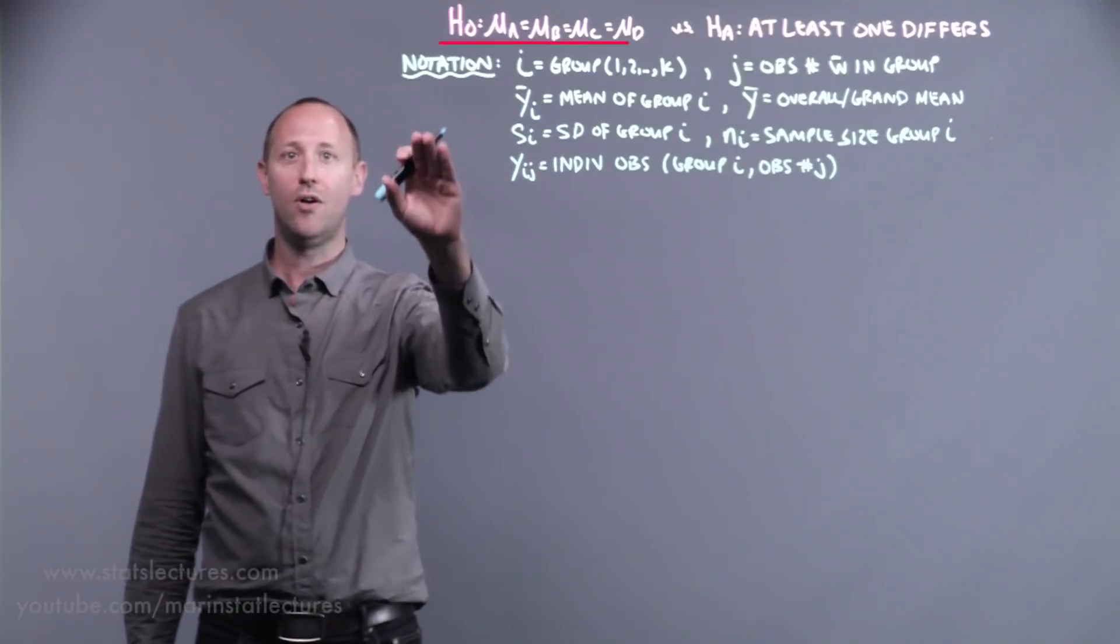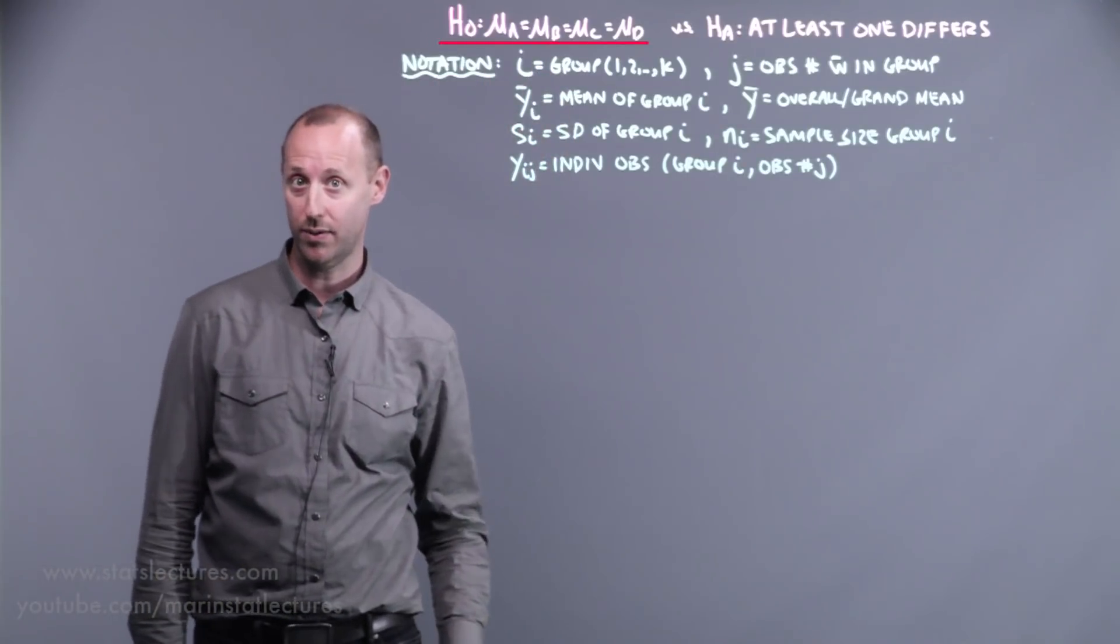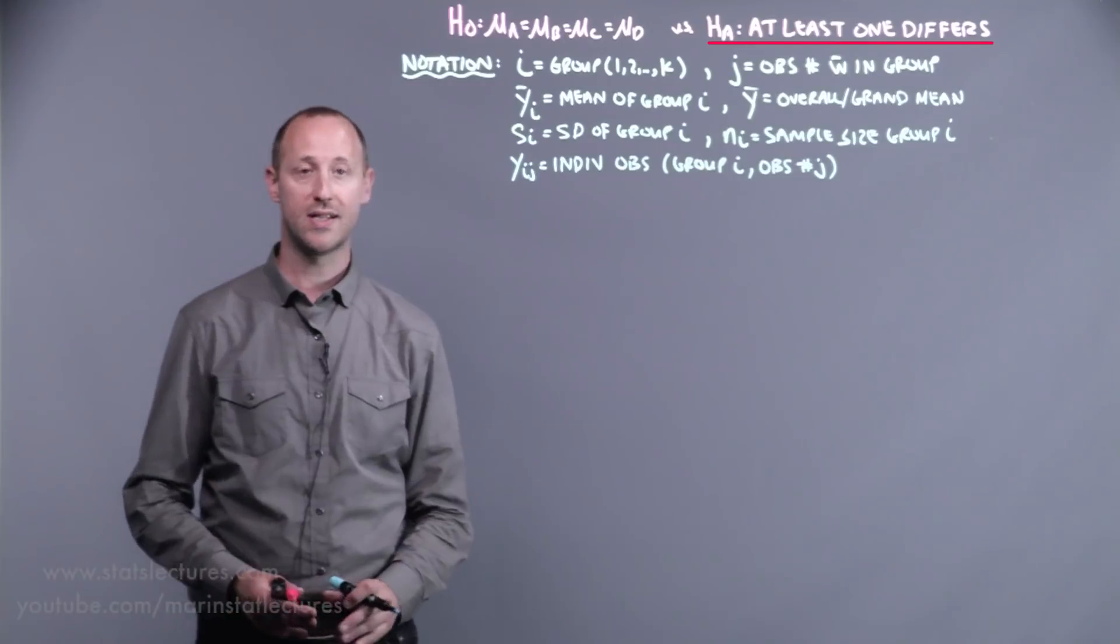We're working with this null, assuming that all means are equal, and an alternative, at least one differs from the rest.